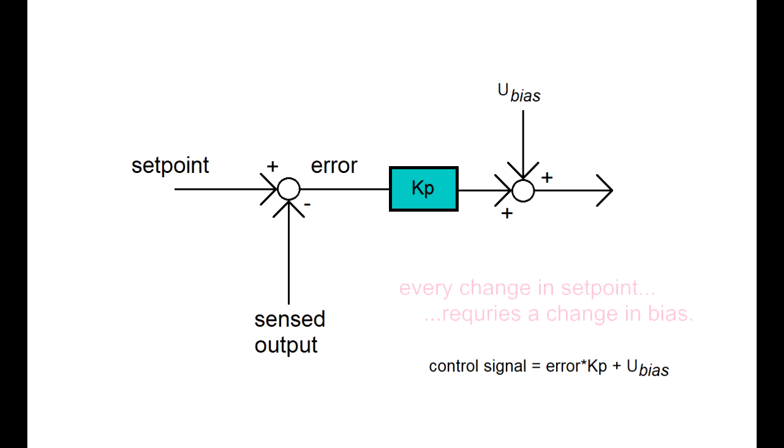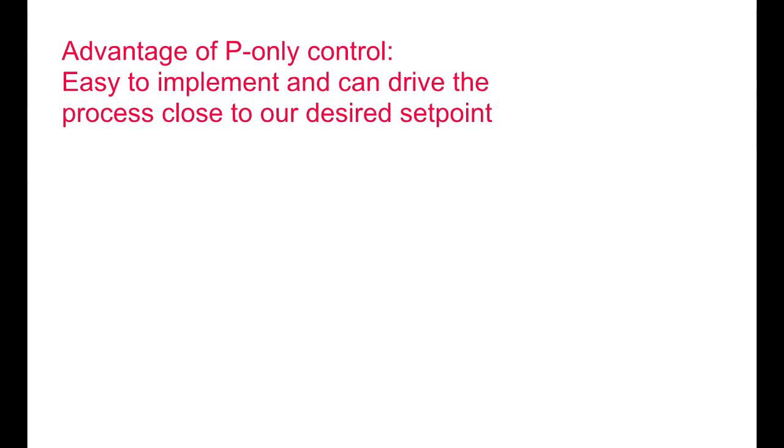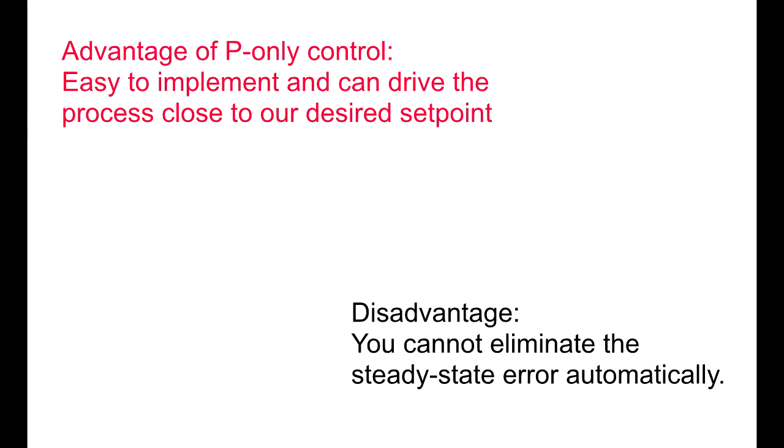But the disadvantage of this method is that for every new setpoint, we're going to have to manually change the bias. Although the proportional controller is easy to implement and can drive the process close to our setpoint, it can never eliminate the offset automatically.